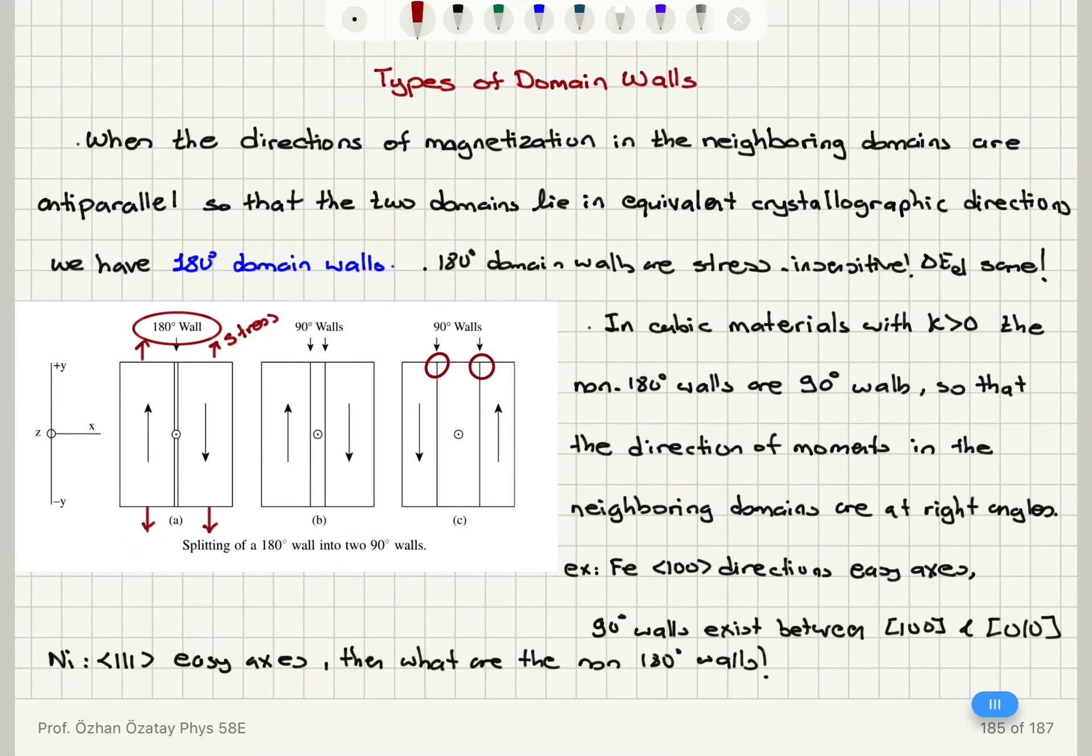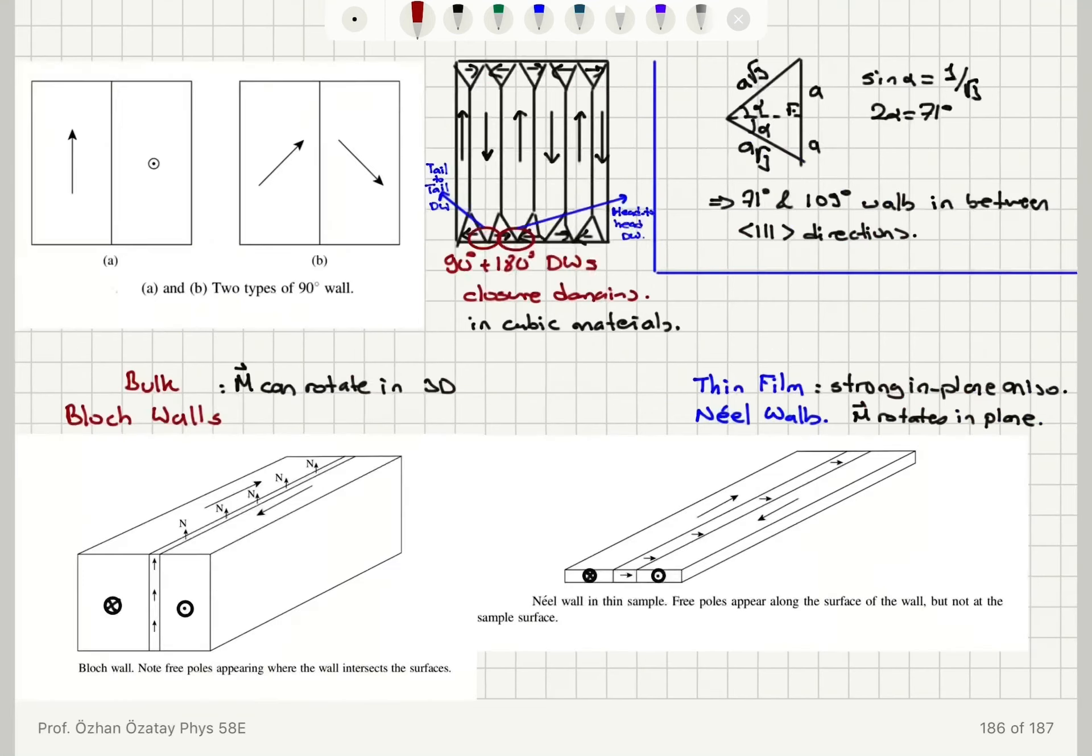So we talked about types of domain walls. Uniaxial anisotropy has 180 degree domain walls, cubic anisotropy has 180 degree and 90 degree domain walls. Also, non-180 degree domain walls are possible. For example, in nickel with the 111 easy axis, we found that it's 71 degree and 109 degree walls.